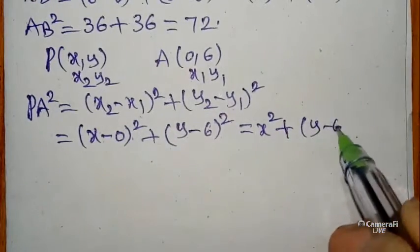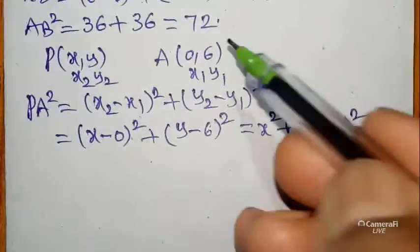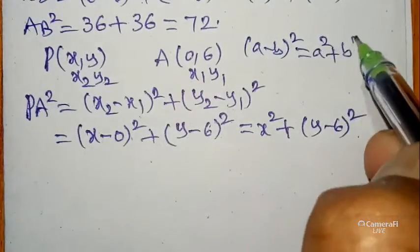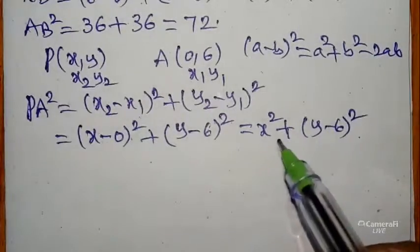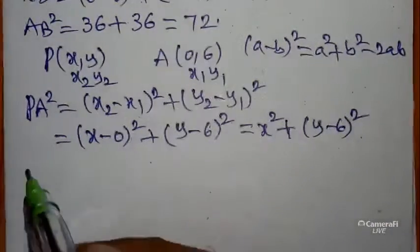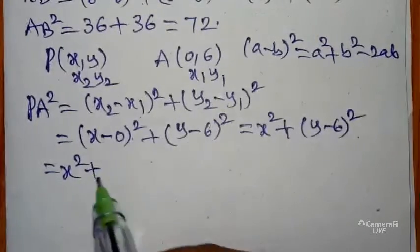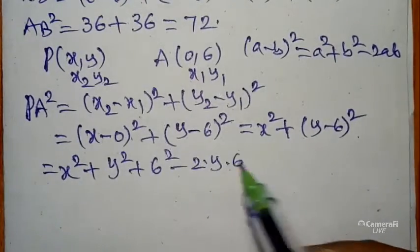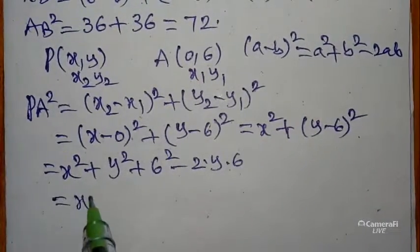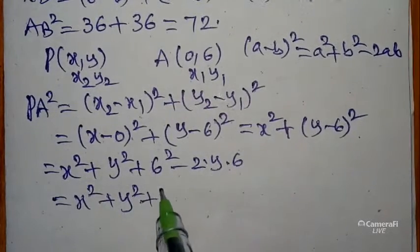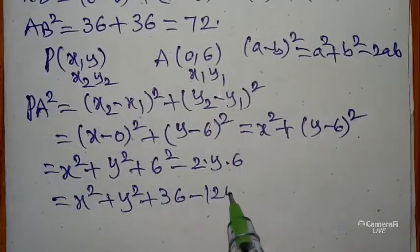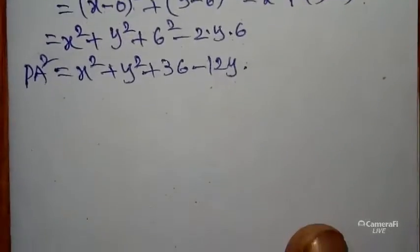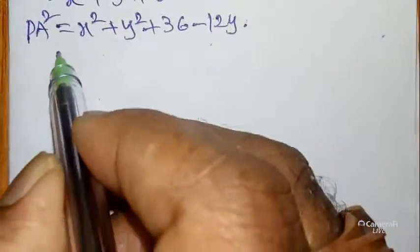Expanding using the identity (a − b)² = a² + b² − 2ab: PA² = x² + (y − 6)² = x² + y² + 36 − 12y.